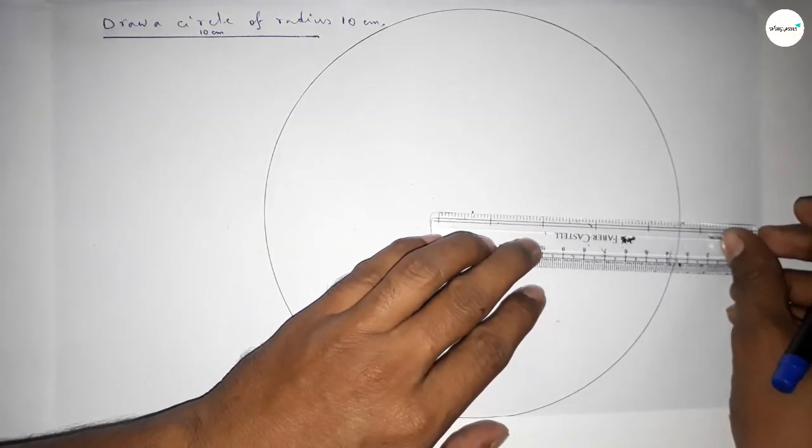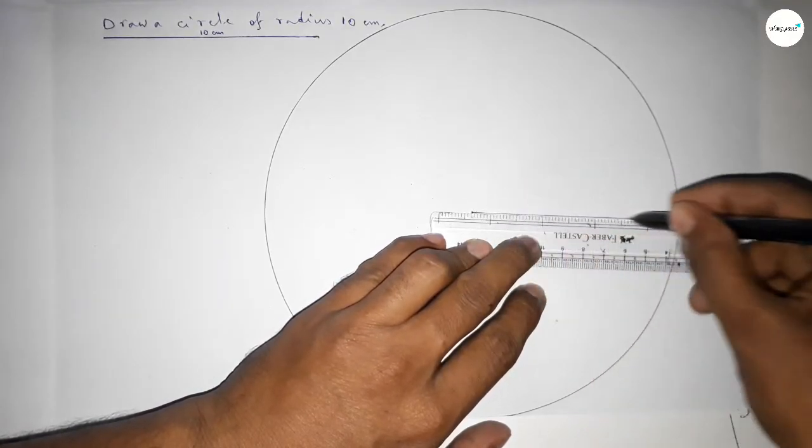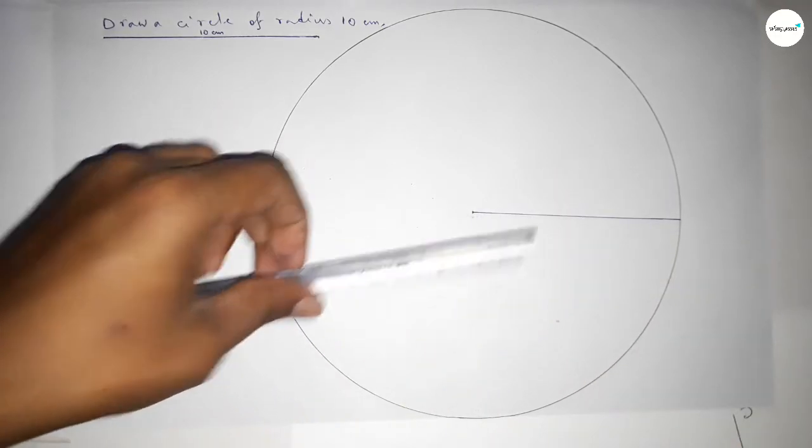Now we have to join the radius of this circle. So this is the radius of this circle.